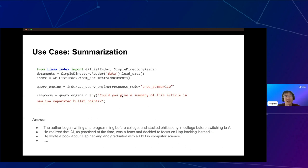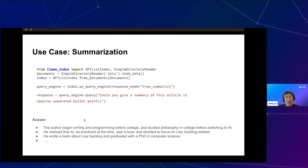Another use case is summarization — not just retrieving relevant pieces of text, but summarizing an entire article. If you use the list index, you store an entire list of nodes, and during query time by default you retrieve all nodes and dump them into response synthesis. You can ask something like 'could you give me a summary of this article in newline-separated bullet points?' This takes all the nodes corresponding to the article, however long it is, adds them to the response synthesis module, which abstracts away the complexity of prompt limitations, and gives you back a final answer like 'the author began writing and programming for college, studied philosophy' — an entire biography of the author.